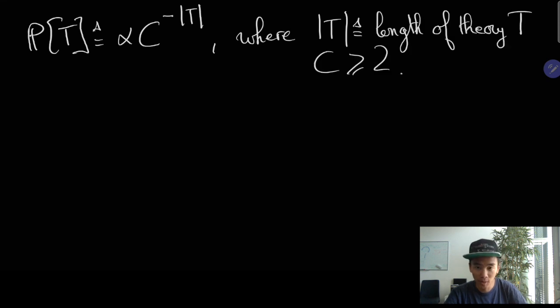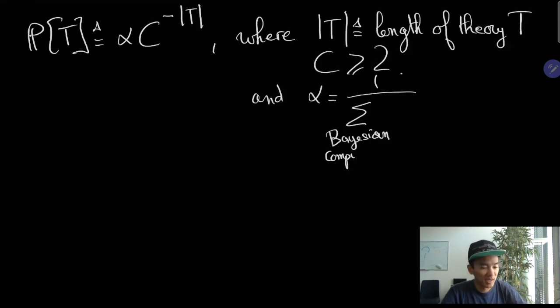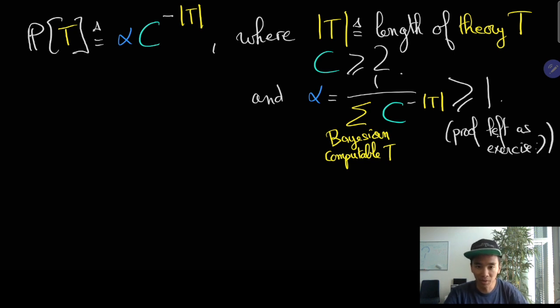Before getting to the proof, let me recall the theorem. We set up a prior probability distribution on all computable probabilistic prediction theories with a prior that typically decreases exponentially with the length of the description of the program of the theory with respect to some universal Turing machine or some Turing complete language.